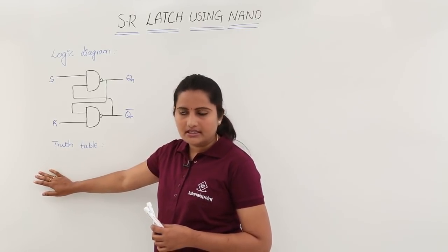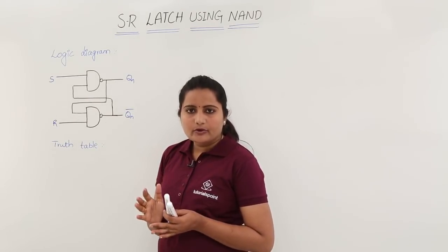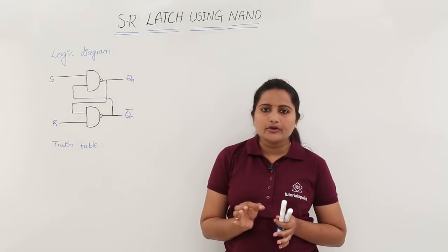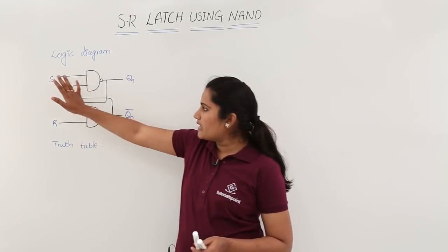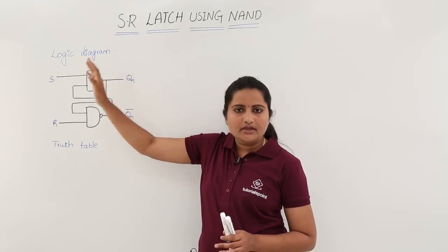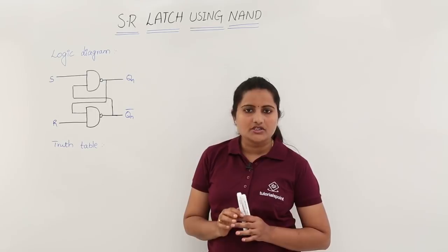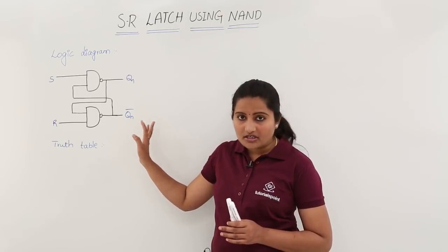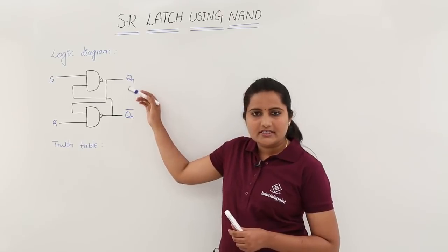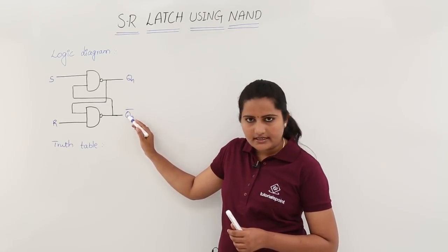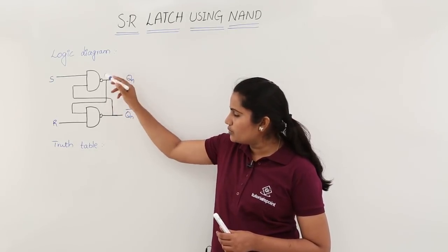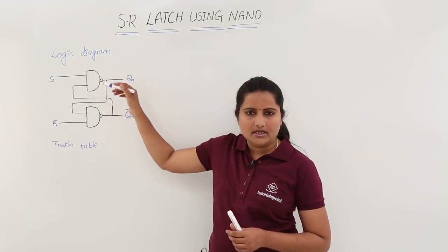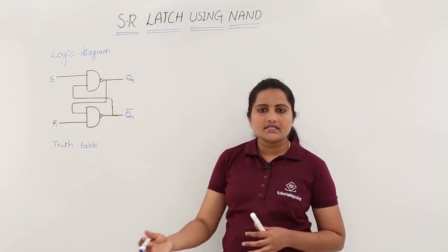I am going to define the truth table for this latch. In the truth table, the input variables are inputs and present state. For any sequential circuit, the inputs are S and R and the present state is QN. Totally for a sequential circuit we are having 3 input combinations of inputs and present state. This is not the next state — the complement shown is the complement of the present state. After processing present state and its complement, whatever you get on the output is called the next state and its complement.